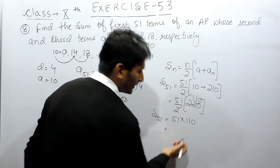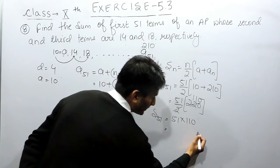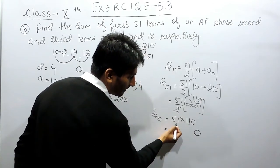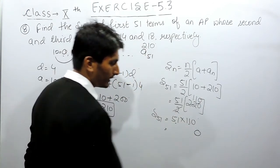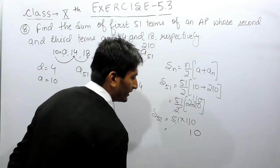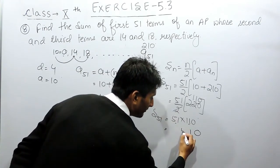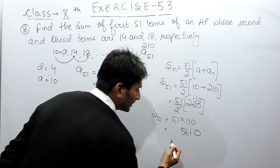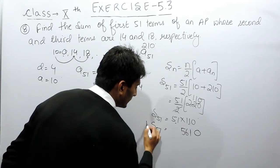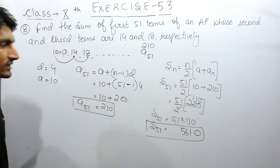So this must be equal to, at the last there is a 0, so I can add a 0. I can multiply 11 by 51 and the result will be the answer. So 11 into 1 is 11, carry 1. 11 into 5 is 55 and carry 1, so that will become 56. So the sum of 51 terms will be equal to 5610.